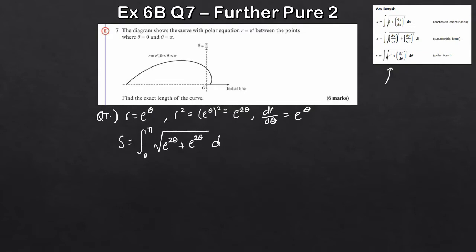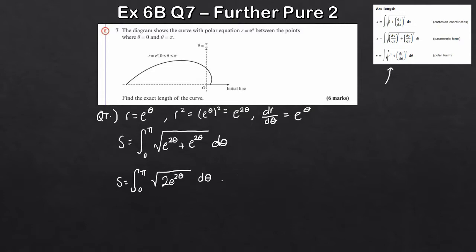We're integrating this with respect to theta. So at this stage I want to simplify underneath the square root. S is still equal to the integral from 0 to pi of the square root of e to the 2θ plus e to the 2θ — that's 2 lots of e to the 2θ — with respect to theta. And this is easy to rewrite in index notation: the integral from 0 to pi of 2e to the 2θ to the power of one half, with respect to theta.